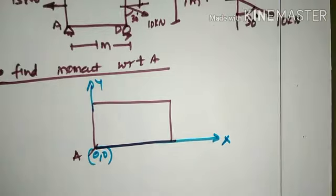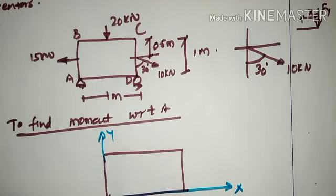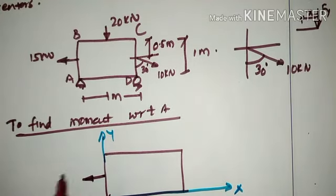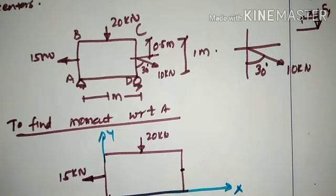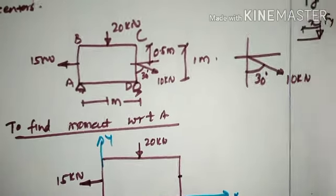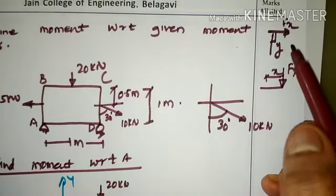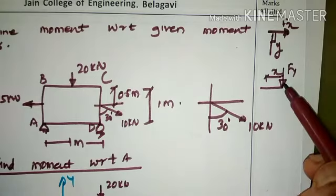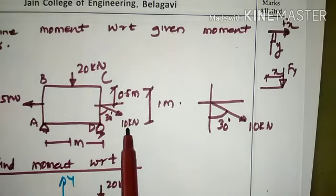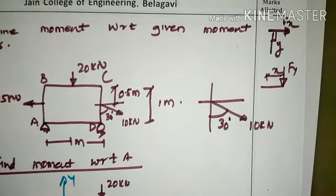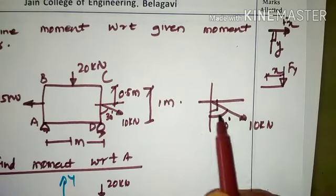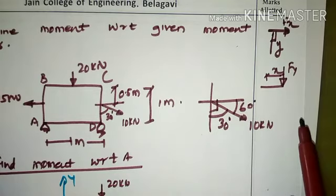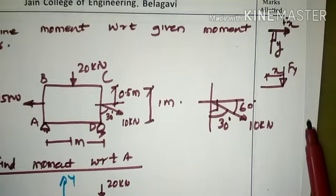We note all the forces given in the problem: a 15 kN horizontal force on the vertical face, a 20 kN vertical force, and an inclined 10 kN force component. The inclined force must be resolved into components parallel to x and y. Since the angle with the vertical is 30 degrees, the angle with the x-axis is 90 − 30 = 60 degrees.